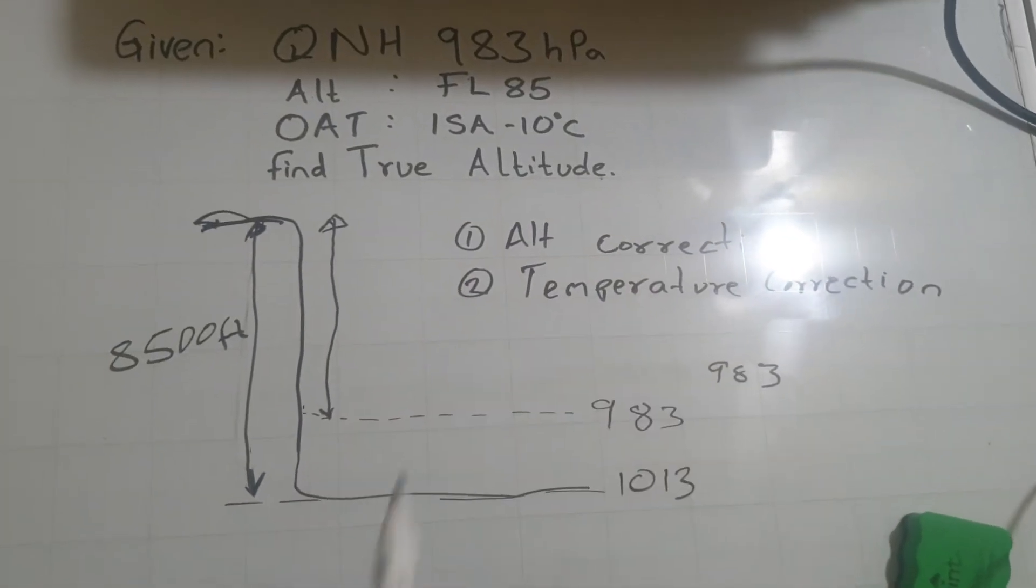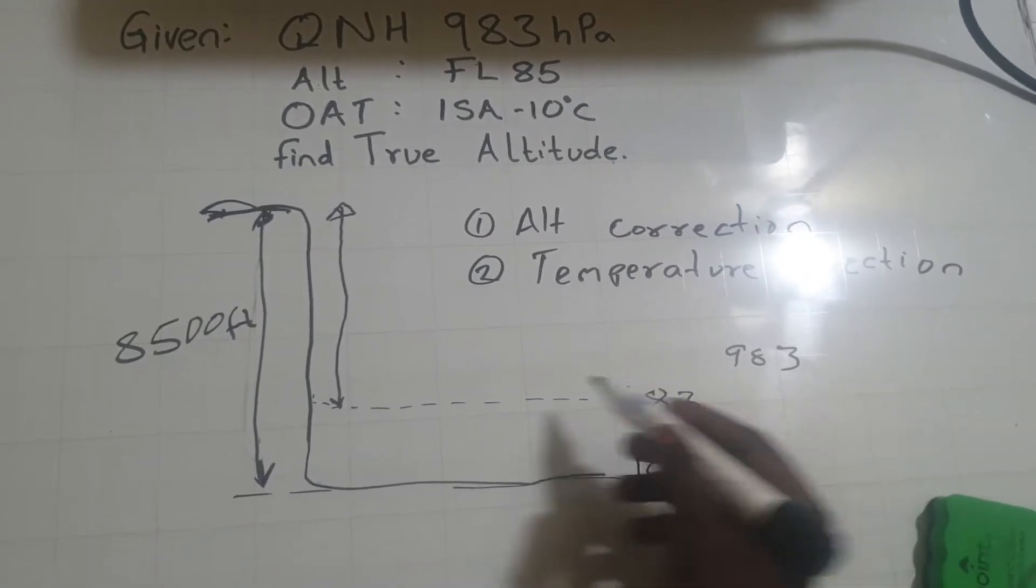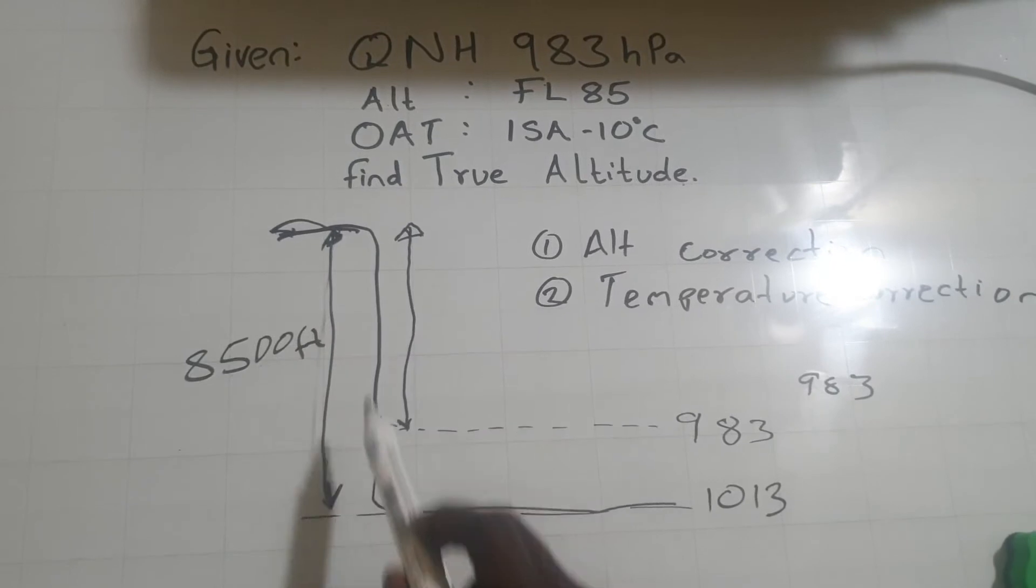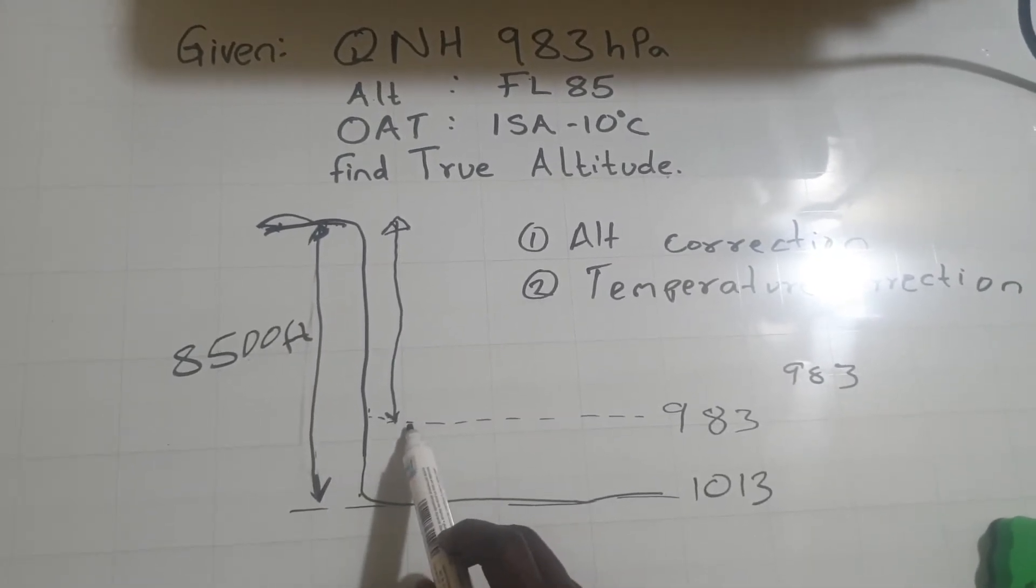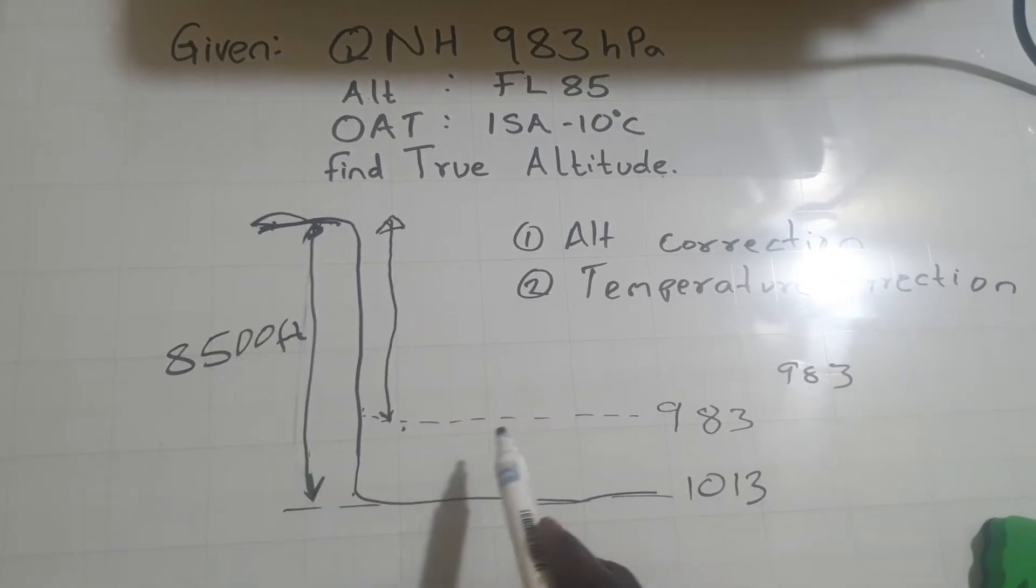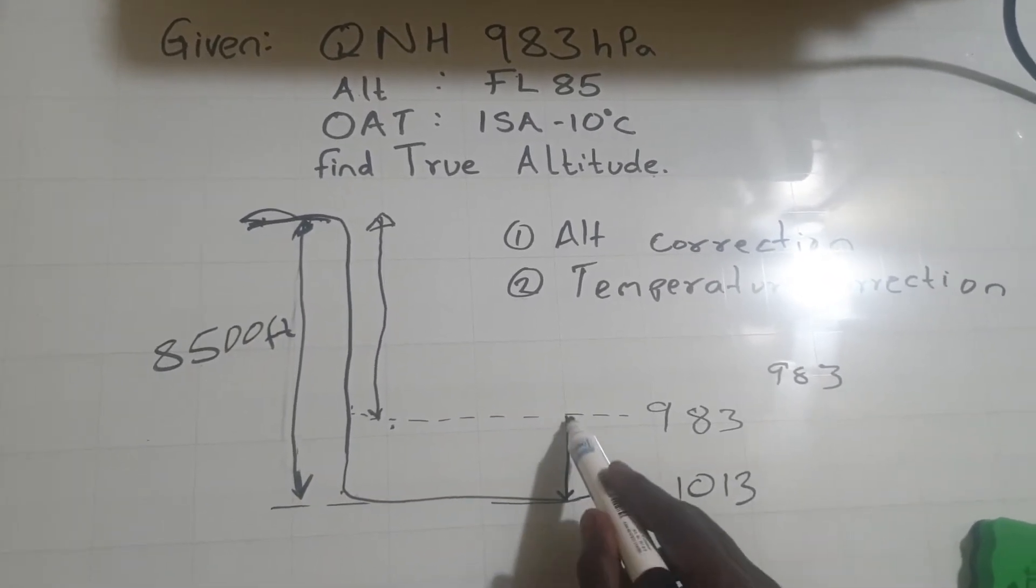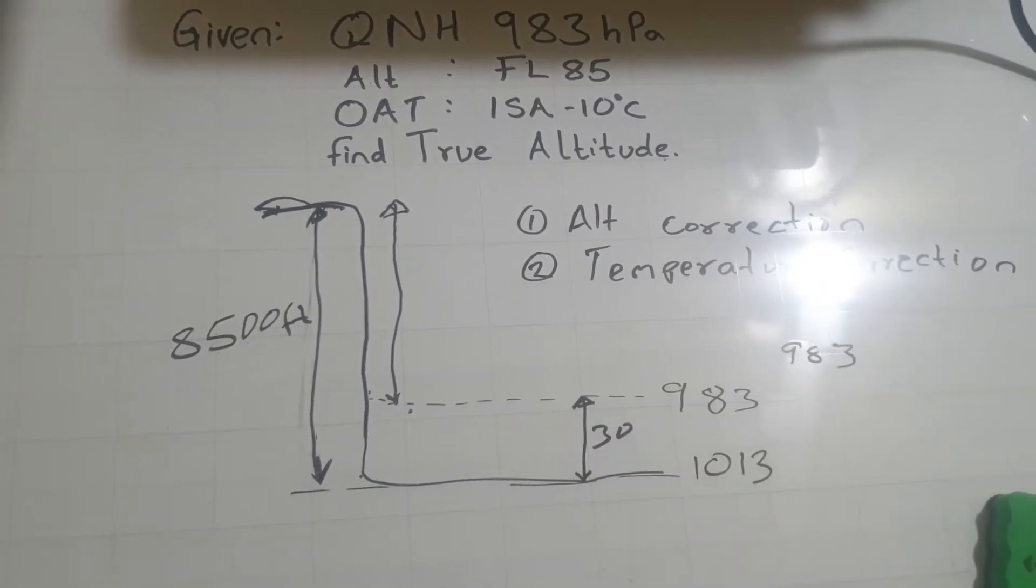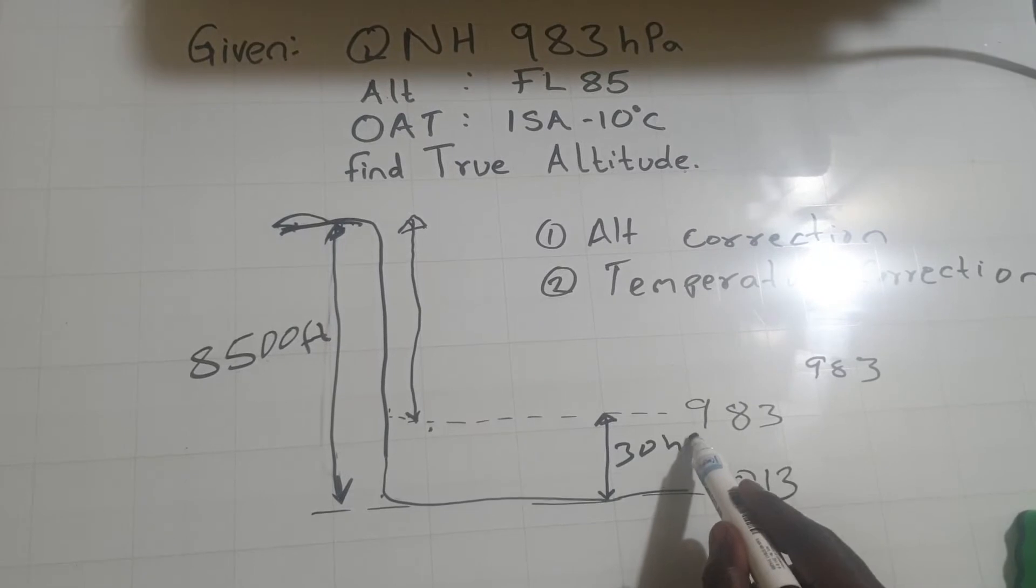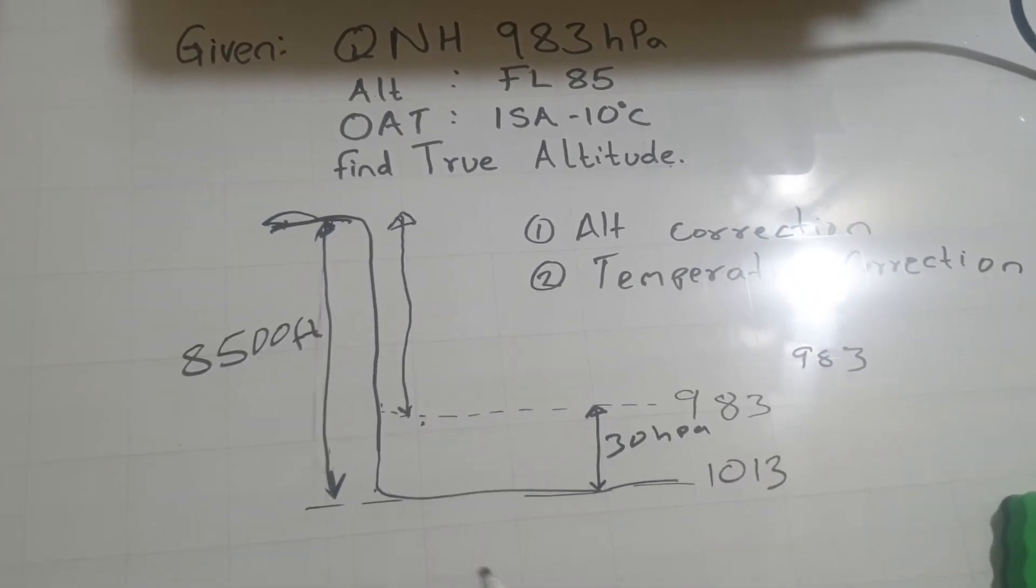So for altitude correction, you can see what's the difference. We need this height. We have the distance from here to here, we know it's 8,500. So we need just the distance from QNH to where the aircraft is. So first of all, the difference between these two, 983 and 1,013 is 30. So you need to find a way of converting this 30 hectopascal to feet so that you can subtract it.